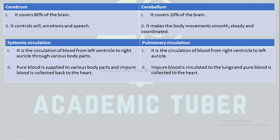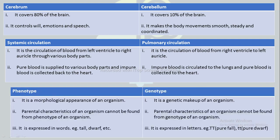The next difference is between systemic circulation and pulmonary circulation. Systemic circulation is the circulation of blood from the left ventricle to the right auricle through various body parts, whereas pulmonary circulation is the circulation of blood from the right ventricle to the left auricle. In systemic circulation, pure blood is supplied to various body parts and impure blood is collected back to the heart. In pulmonary circulation, impure blood is circulated to the lungs and pure blood is circulated to the heart.